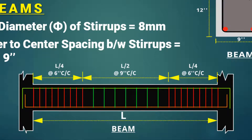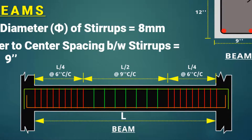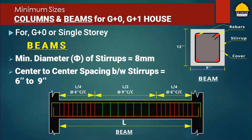The stirrups are placed closely at 6 inch spacing center to center on both sides of the beam and column junction, and the spacing is increased at the middle portion of the L/2 span of the beam. You can also use 6 inch spacing throughout the beam section for achieving better strength against beam bending and shear failure. Decreasing the spacing requires more quantity of steel, which would be a little more expensive but is good for saving your life and the longevity of the structure.